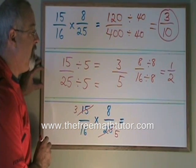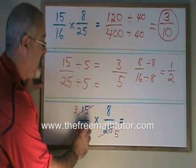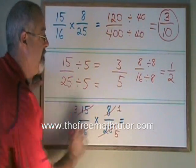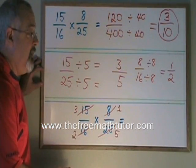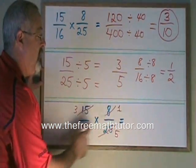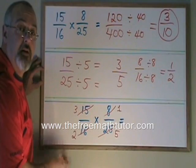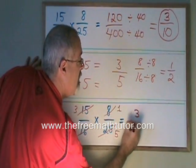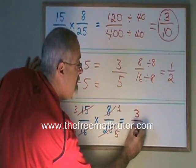I can do the same thing with the 16 and the 8. 16 divided by 8 is 2, and 8 divided by 8 is 1. Now I multiply like I'm used to, but I use the little numbers that I wrote in—my new numerators and denominators. 3 times 1 is equal to 3, and 2 times 5 is equal to 10.